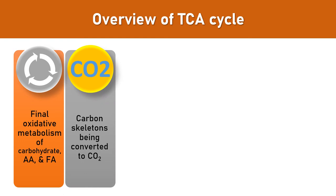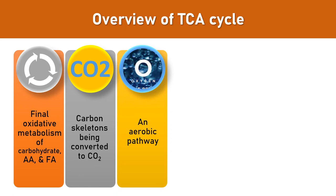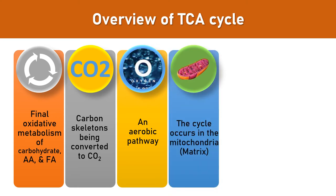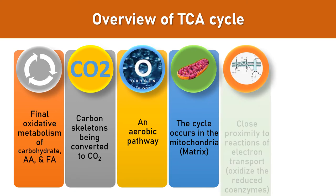The acetyl-coenzyme A is completely oxidized to carbon dioxide; no other intermediate is utilized inside the cycle. This cycle takes place only in the presence of oxygen. Although oxygen is not directly utilized inside the cycle, the oxidized forms of NAD and FAD are utilized to form reduced equivalents, and a regular supply of NAD and FAD is required from the electron transport chain, which requires oxygen — hence without oxygen the TCA cycle cannot operate.